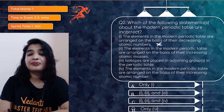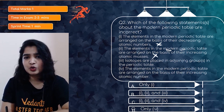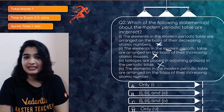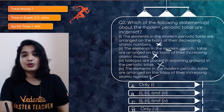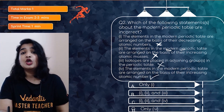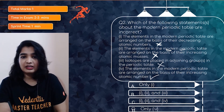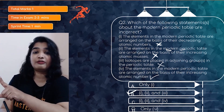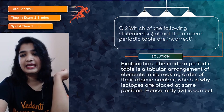Statement two: elements are arranged on the basis of their increasing atomic masses — this is also incorrect for the modern periodic table. Statement three: isotopes are placed in adjoining groups — also incorrect. Statement four: elements are arranged on the basis of their increasing atomic number — this is correct. So statements one, two, and three are incorrect. The question asks for incorrect statements, so option B (1, 2, and 3) is the right answer. Don't choose only four, as that statement is actually correct.